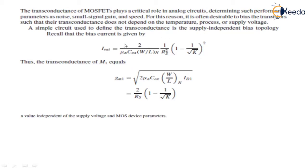So from this circuit, we have already derived this equation previously, and the transconductance of M1 — of any transistor — equals: GM1 = √(2·μn·Cox·W/L·n·ID1). Now substituting the value of ID1 from the I_out equation into the GM1 equation, we get GM1 = (2/Rs) · (1 − 1/√k).